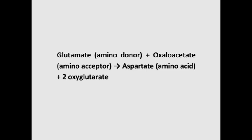The transamination pathway: other amino acids are derived from glutamate through a process known as transamination, catalyzed by the enzyme aminotransferases, also called transaminases. Transamination involves transfer of an amino group from one amino acid to the keto group of a keto acid. For example, glutamate (amino donor) combines with oxaloacetate (amino acceptor) to form aspartate plus two molecules of alpha-ketoglutarate.